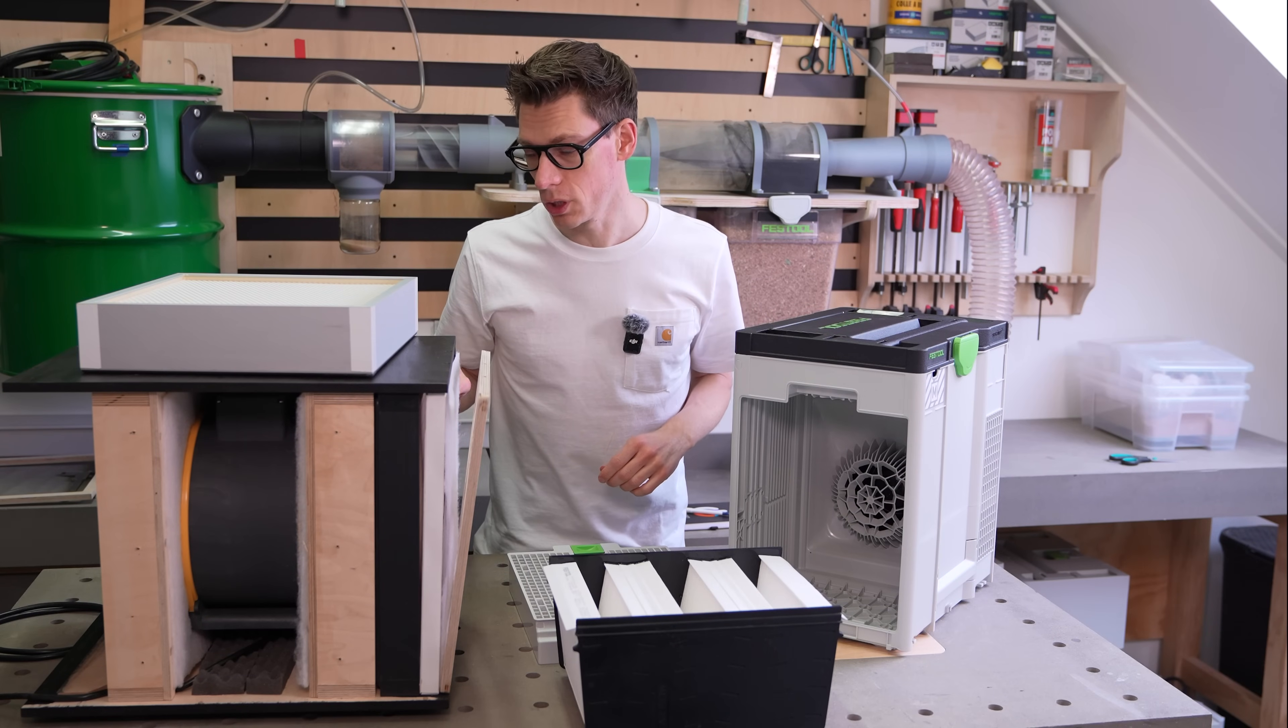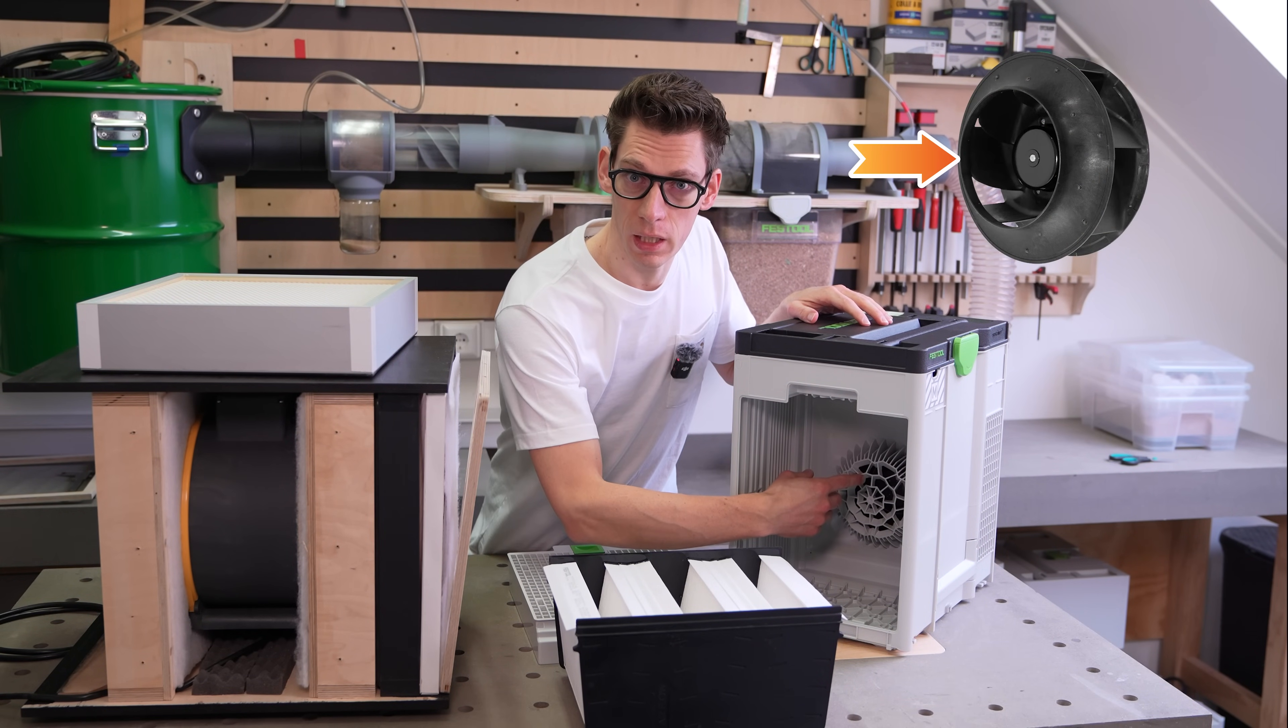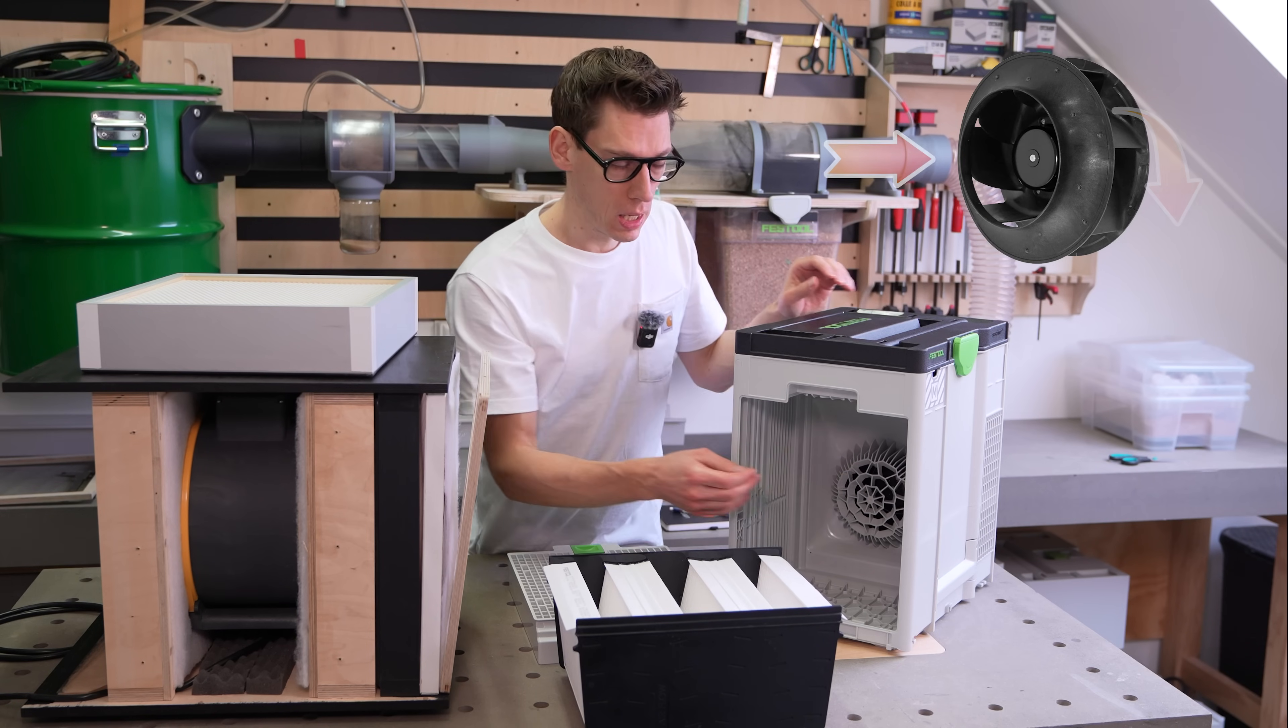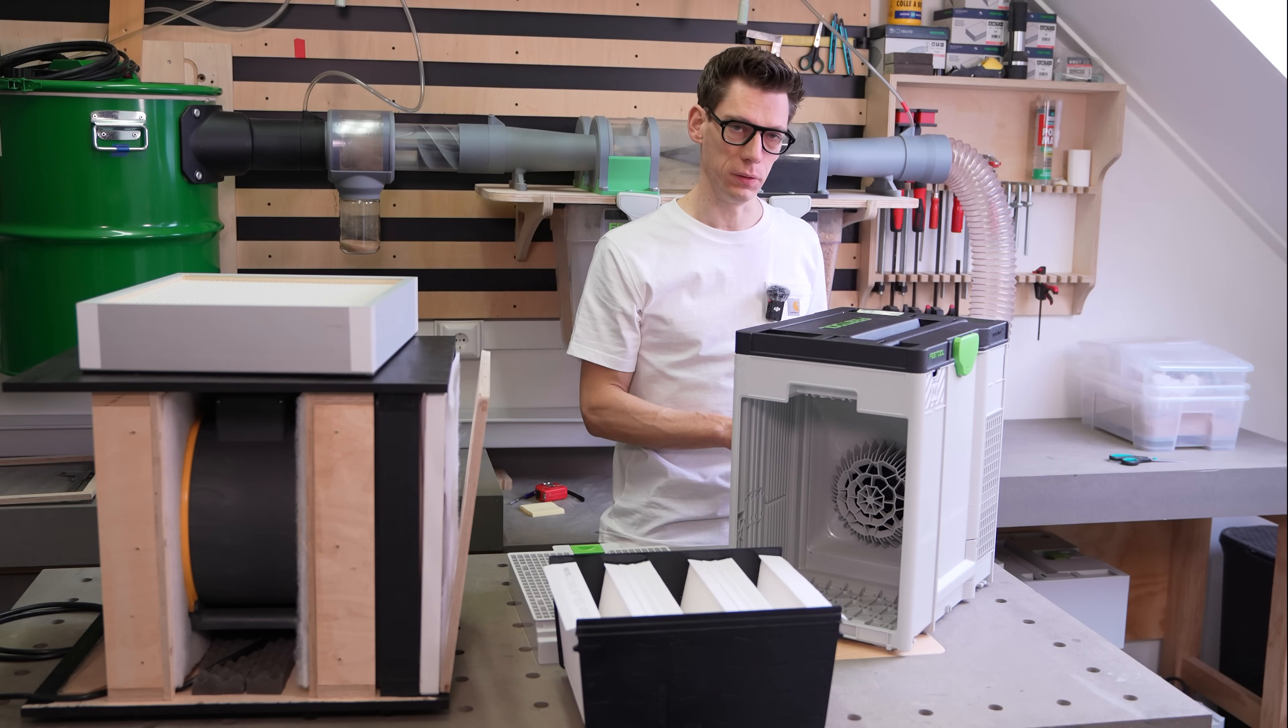Instead of using a tube fan, Festool did another approach with a centrifugal fan that sucks in the air through the middle and spits it out through the sides, without going through an extra filter. Downside of that is that the motor sound from the blower is not dampened by a filter.